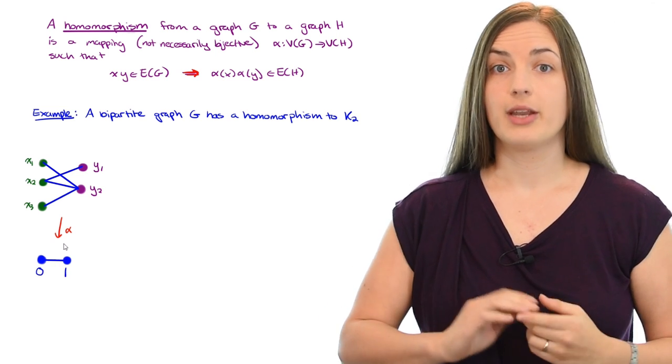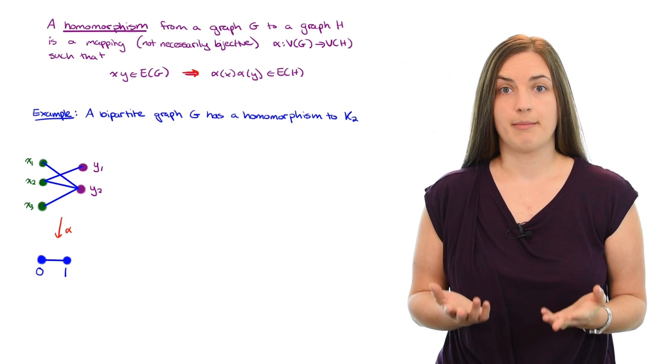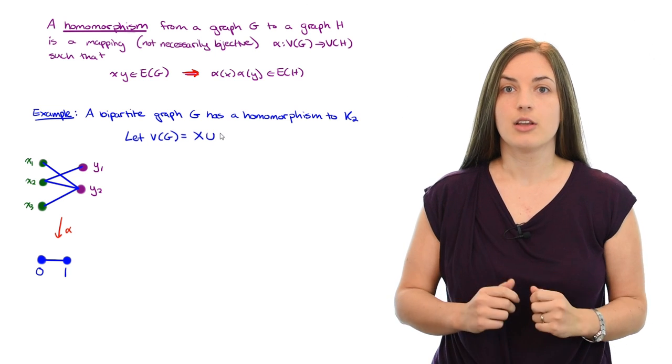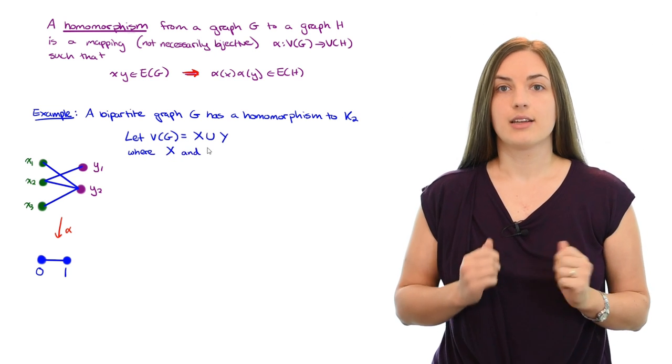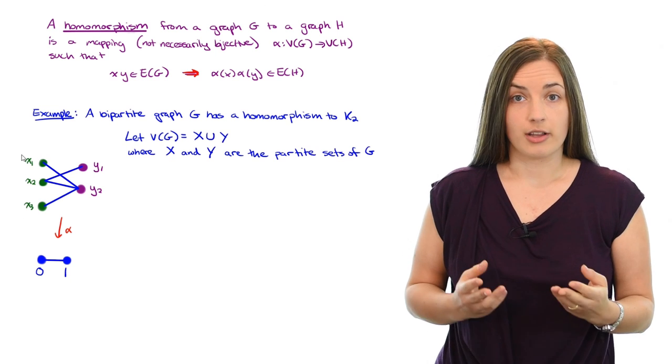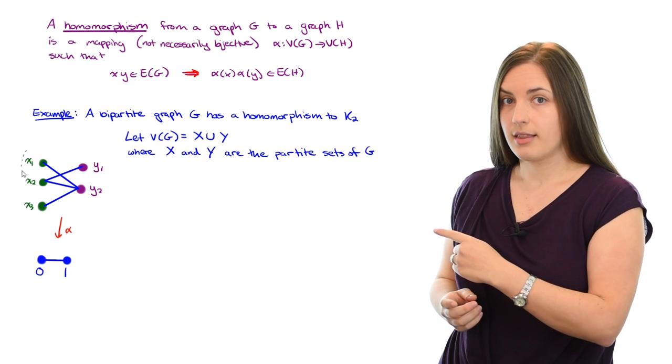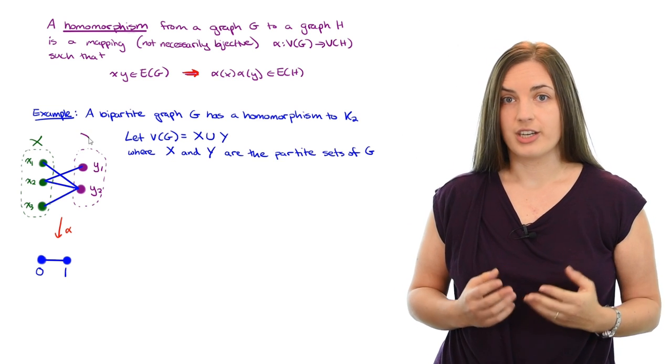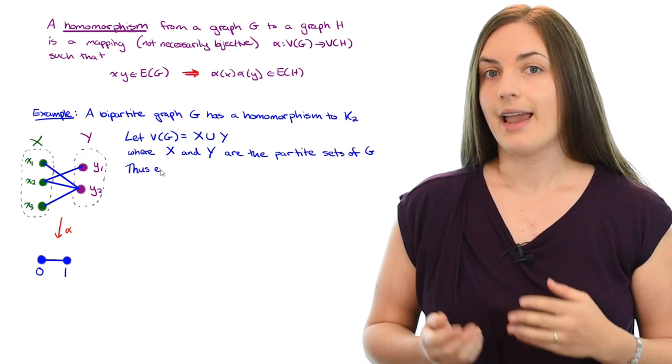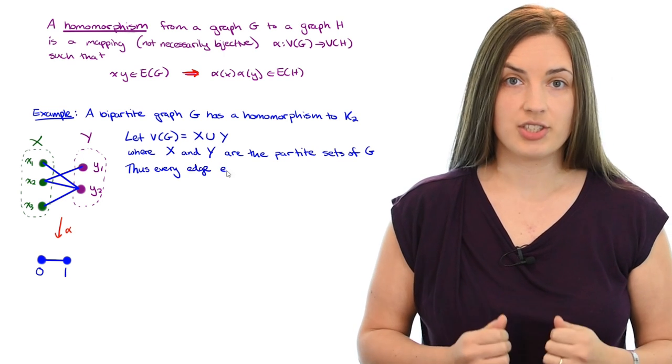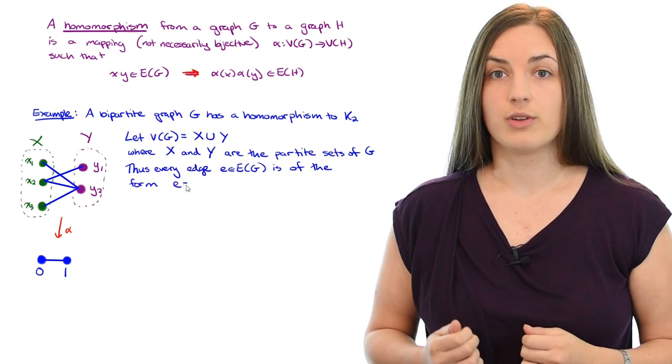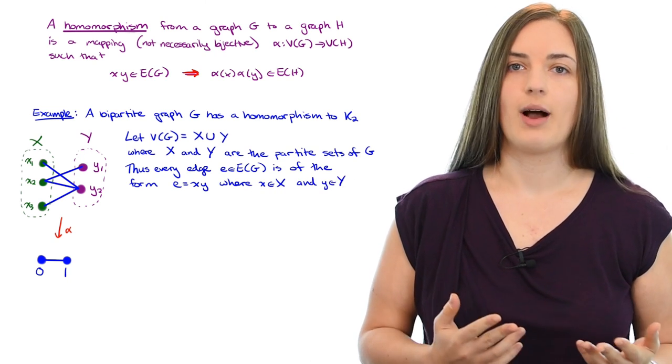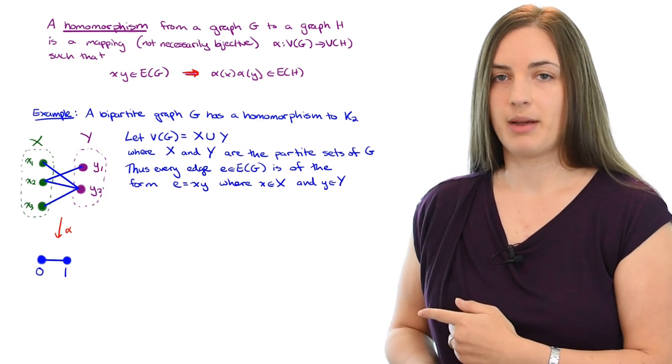So let's start writing some things down that we know. We know that G is a bipartite graph. So let's let the vertex set of G be given by X union Y, where X and Y are the partite sets of the graph G. In our little picture example, we can see that the highlighted green portion is the set X, and the highlighted purple portion is the set Y. Thus, every edge E in the edge set of the graph G is of the form E equals x, y, where x belongs to the set X, and y belongs to the set Y. This is the definition of being bipartite. And of course, you can check it out in our little example.